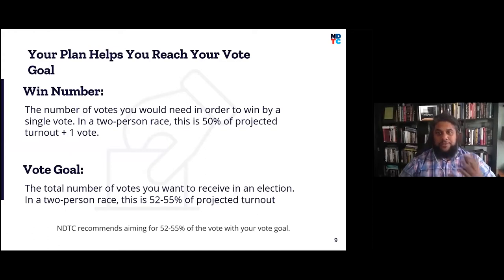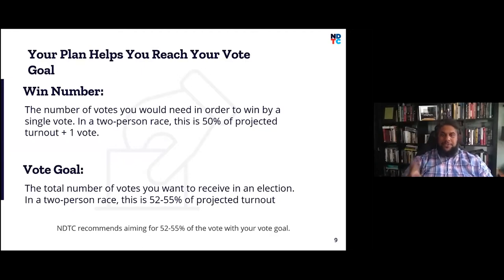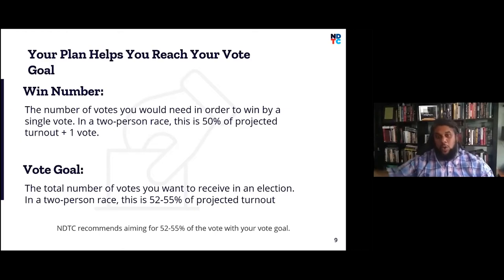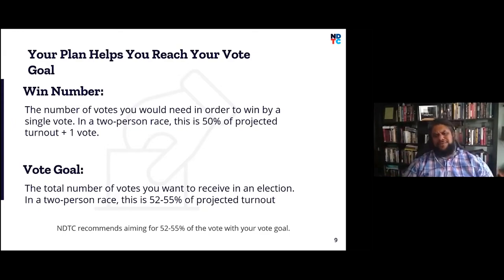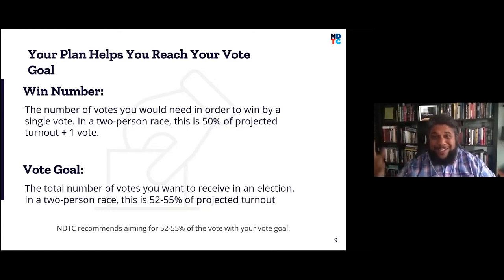You also need to know your vote goal — the total number of votes you want to receive in an election. In a two-person race, 52% to 55% is a good guideline for a vote goal. That's how many people you want to go vote for you, to ensure you hit your win number with some wiggle room — because some people who intend to vote will forget or have something come up on election day.